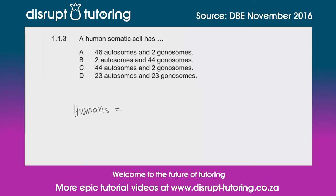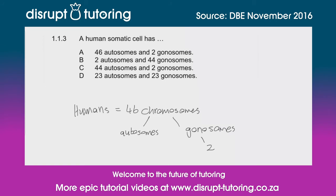...46 chromosomes. Those chromosomes are broken down into autosomes and gonosomes. Every human has 2 gonosomes and the rest are your autosomes — that's 44. So these two together give us our 46 chromosomes, and the correct answer is therefore C: 44 autosomes and 2 gonosomes.